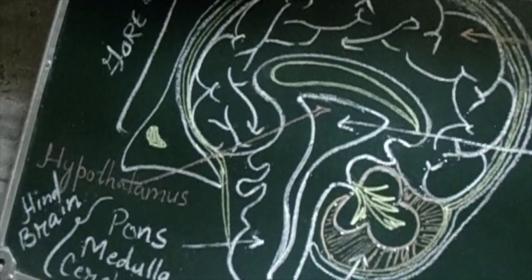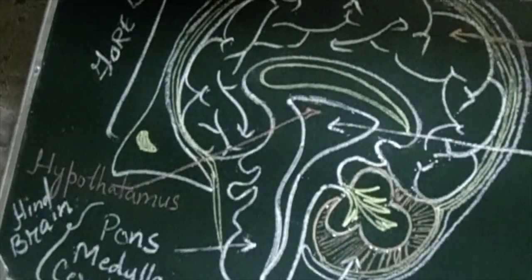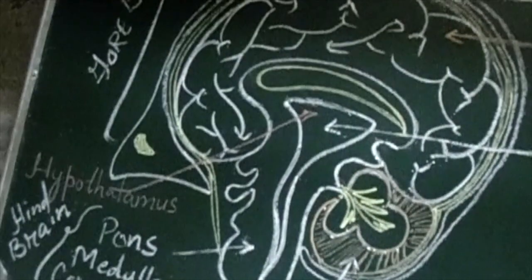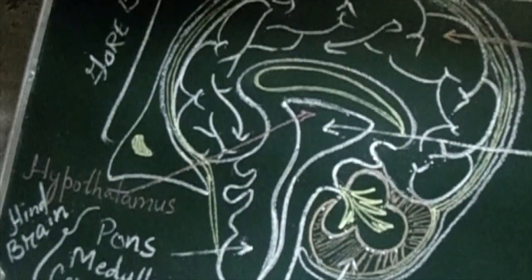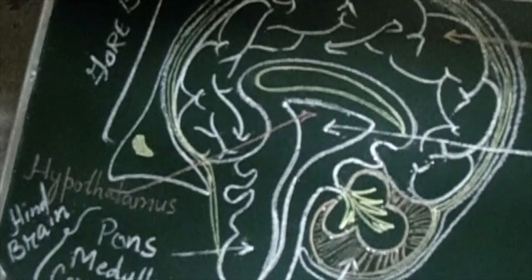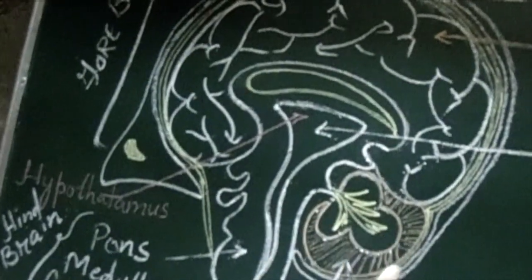Now what are the functions of pons? It has the controlling center of mastication, facial expression, respiration and forms the conducting pathways. Next the function of cerebellum.